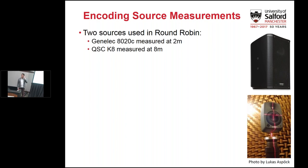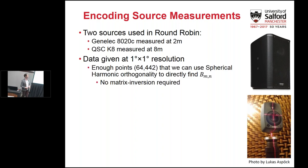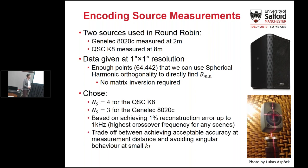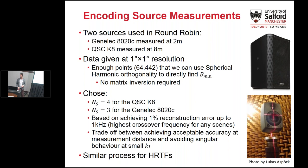In the round robin they used two sources: a GENELEC 8020 and a QSC K8. They were measured at different radii with very high resolution, so there are no matrix inversion issues when calculating the BNM coefficients — we can use spherical harmonic orthogonality directly. We chose order four for the K8 and order three for the 8020. These seem low but are based on achieving one percent reconstruction error up to one kilohertz — the highest crossover frequency between BEM and geometric acoustics — balancing accuracy at the measurement distance against avoiding singular behavior at small kr.